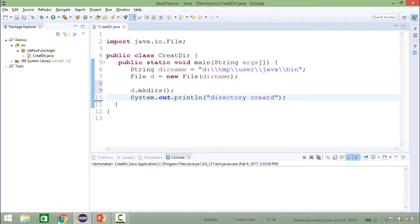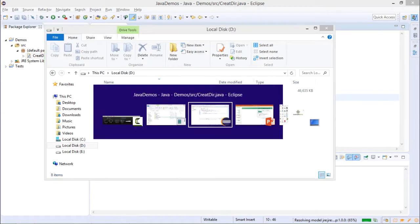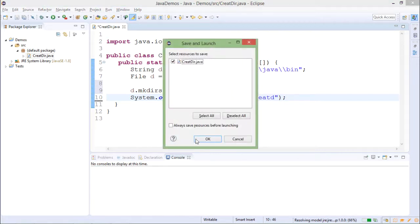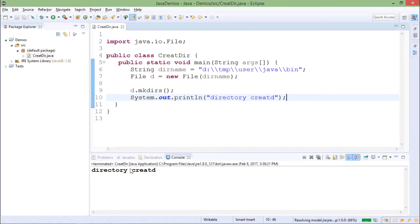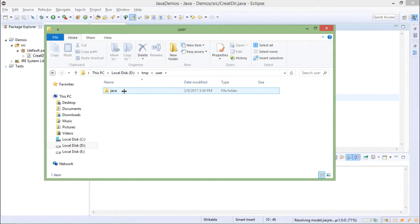So if you go to the D drive and check, right now there is no directory with tmp. After I run this code, directories created. The subdirectories are user java bin, so tmp is there, user java bin. I will see tmp user java bin is created.